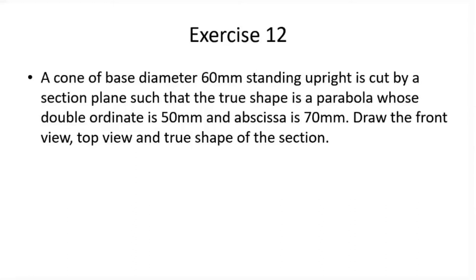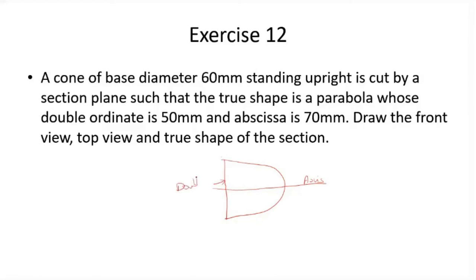I'll explain what double ordinate and abscissa mean in a parabola. A parabola has an axis — the axis of the parabola. The double ordinate is a line perpendicular to the axis, like this. This line is the double ordinate. The abscissa is the distance from this point to that point.